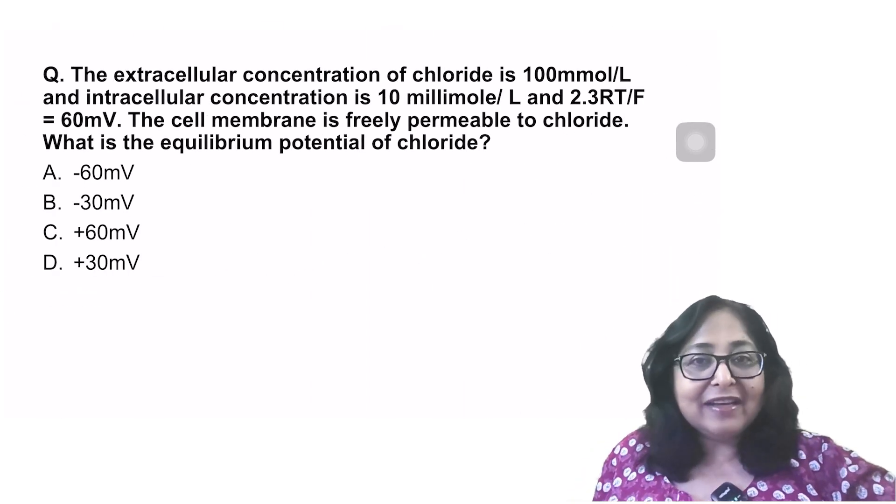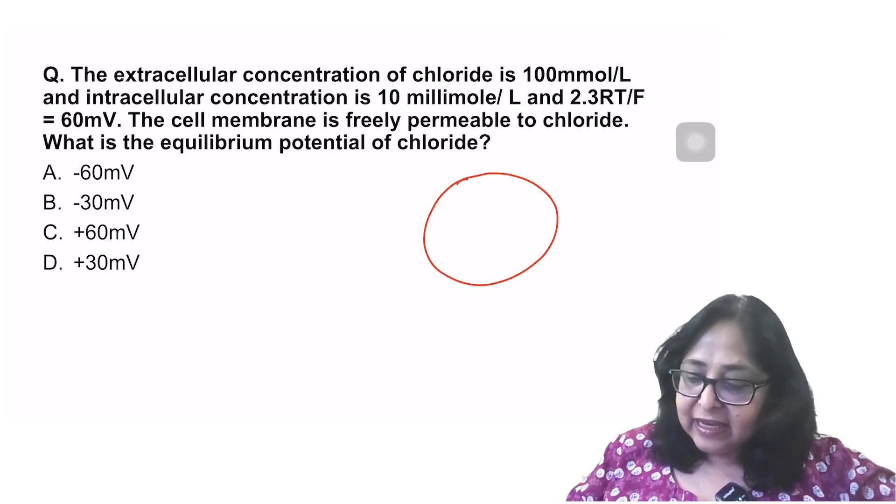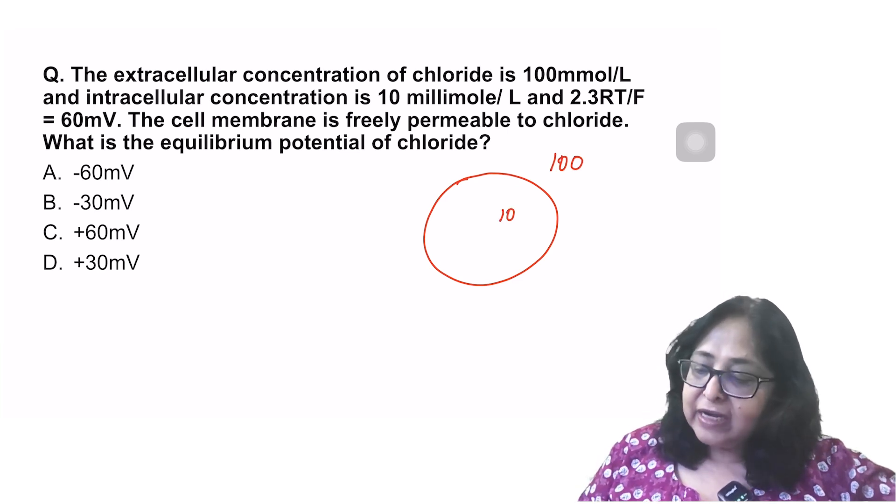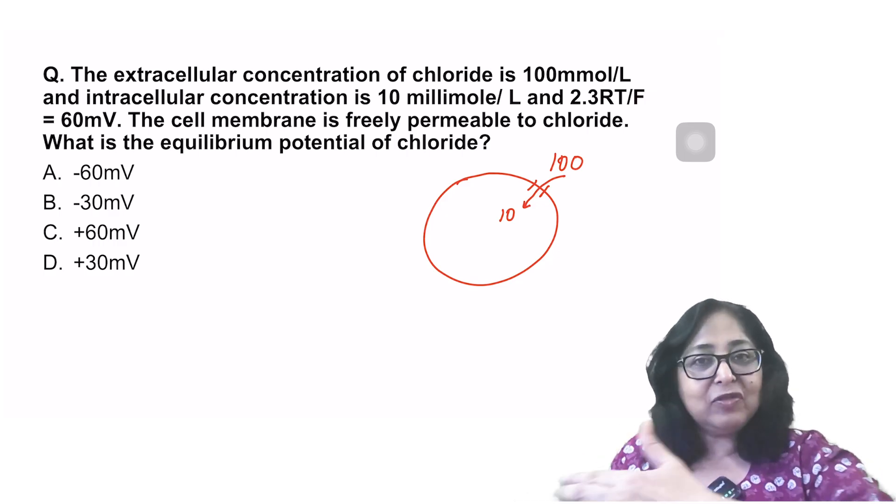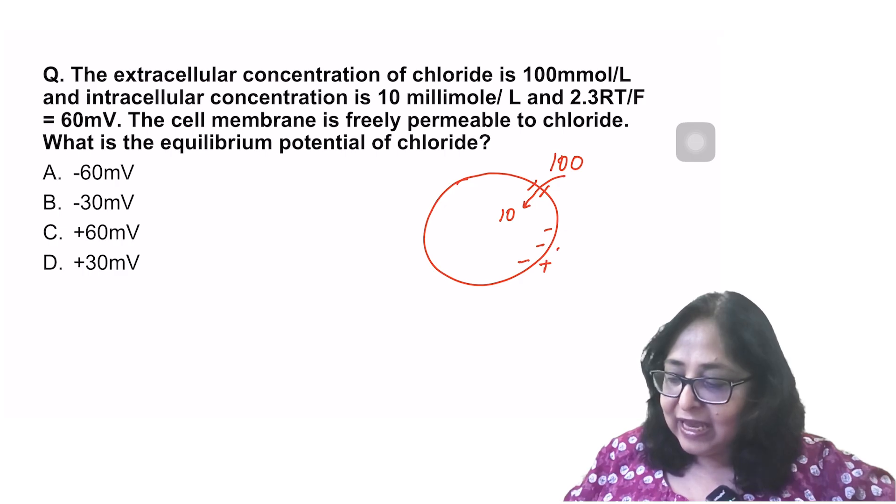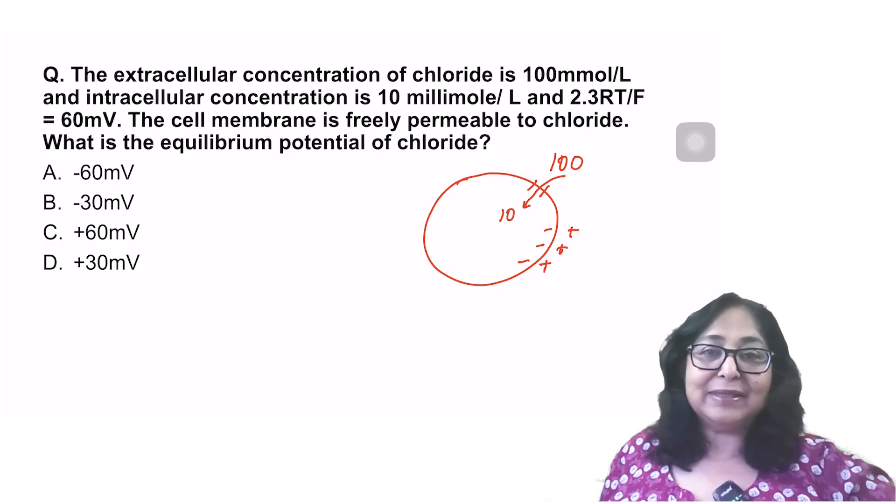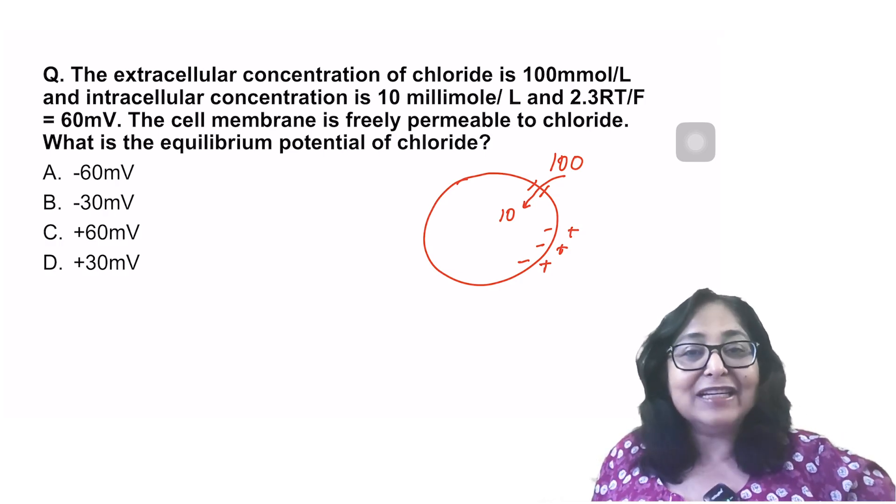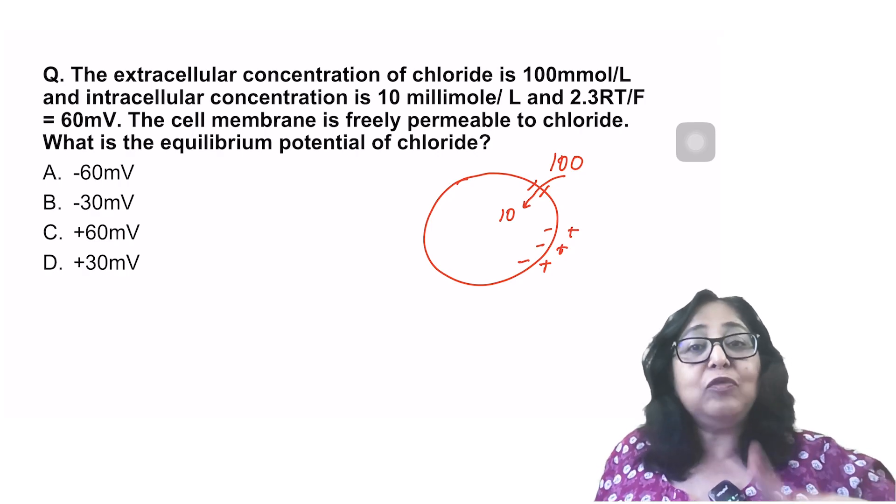Let's have a look at the next question. It says, extracellular concentration of chloride is 100 and intracellular is 10 millimoles per liter. So cell membrane is freely permeable to chloride. If it is freely permeable to chloride, that means chloride will come from outside to inside. And when it comes from outside to inside, since this is an anion, then inside will gain a negative charge. Inside will become negative with respect to outside. So inside will develop a negative potential.